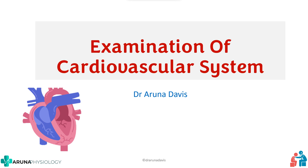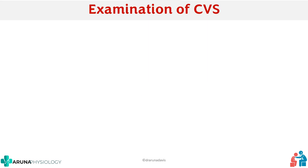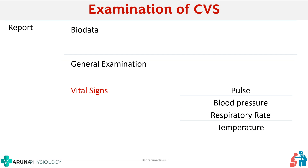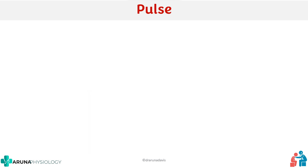Whatever system it is, whenever you have to examine any system, you have to write a report which should contain the bio data, the general examination including the vital signs — that is pulse, blood pressure, respiratory rate, and temperature. So for CVS also, you have to examine the initial things, the general examination and vital signs. The pulse should be done in detail because we are examining the cardiovascular system.